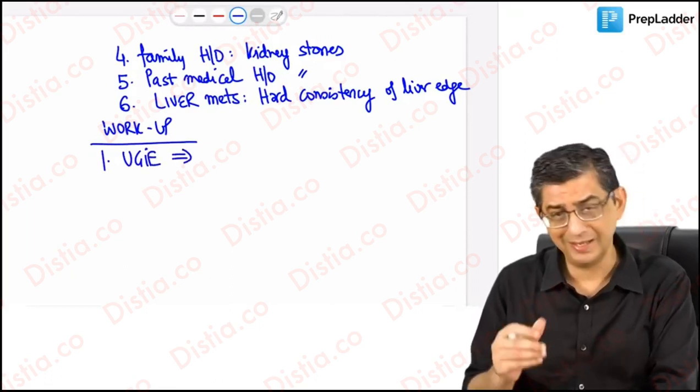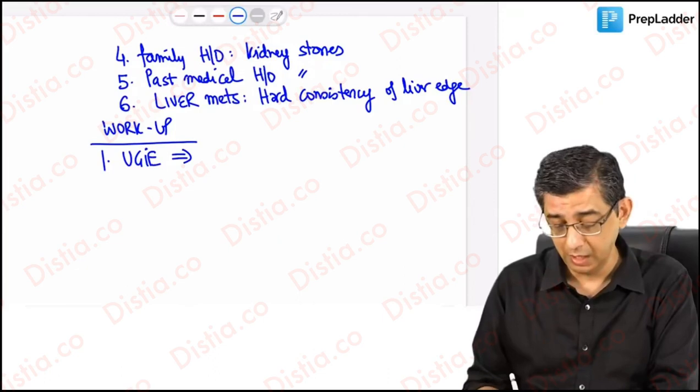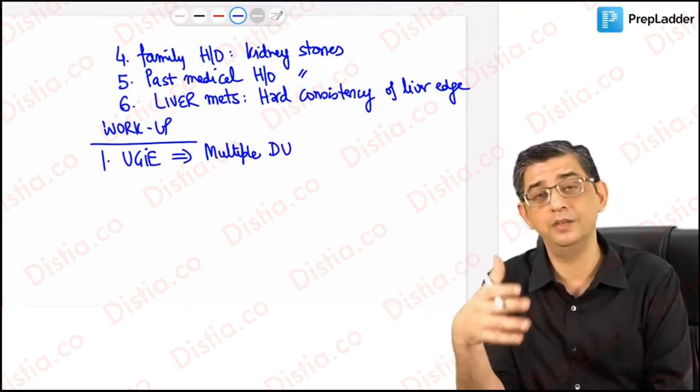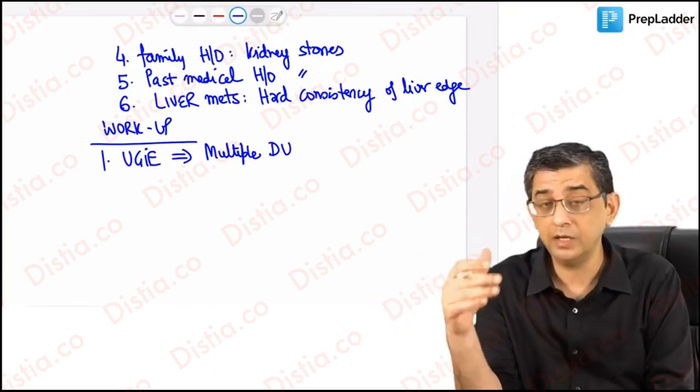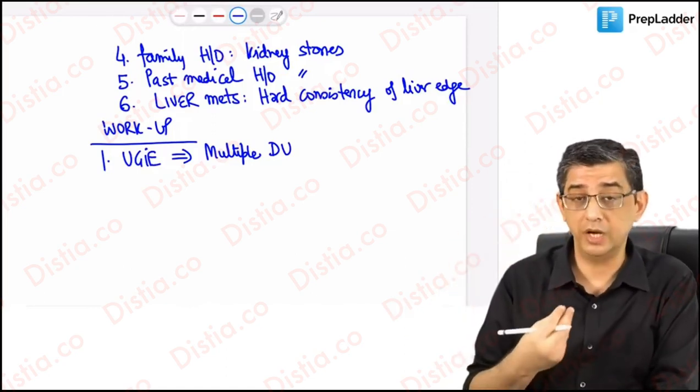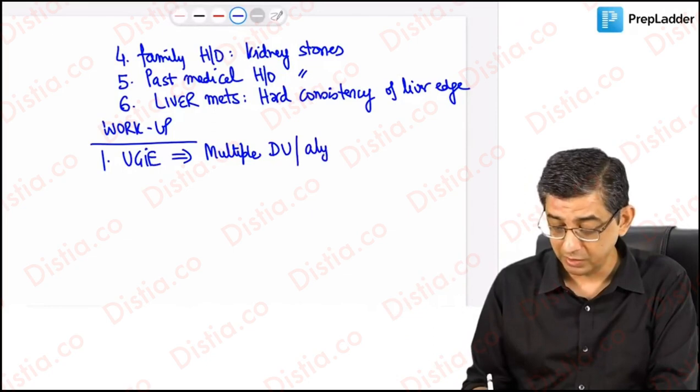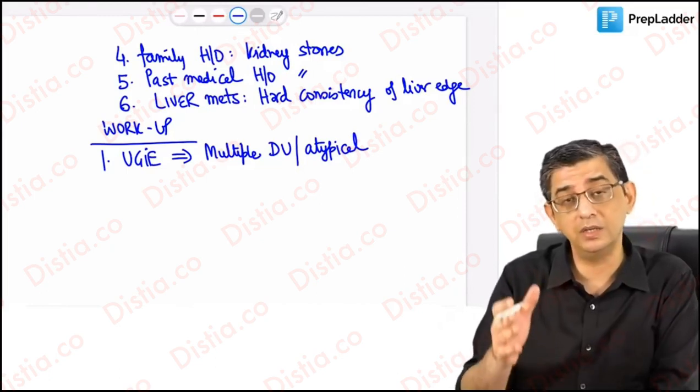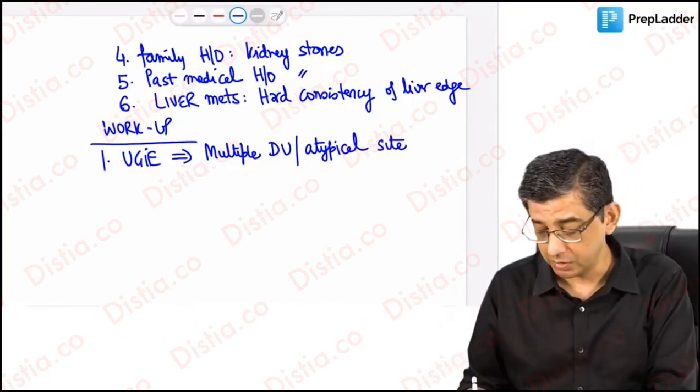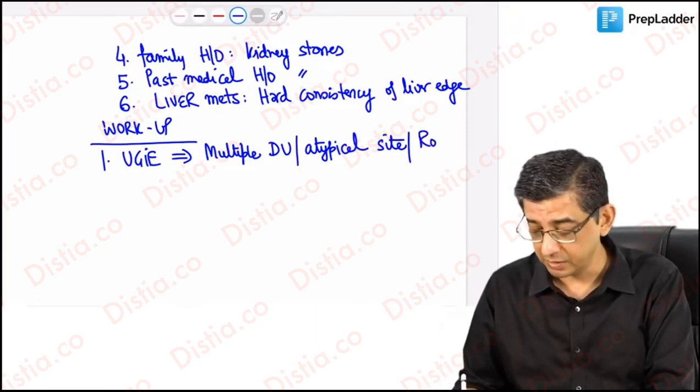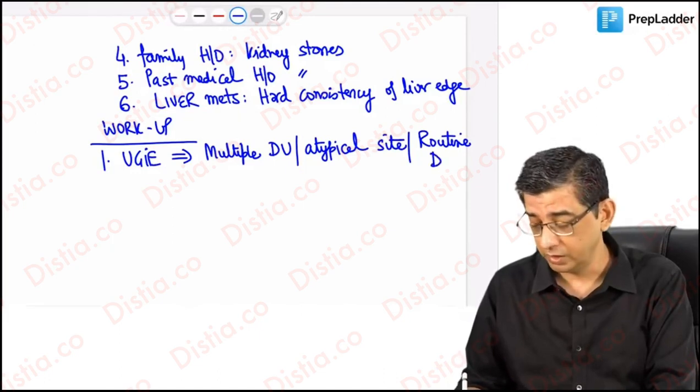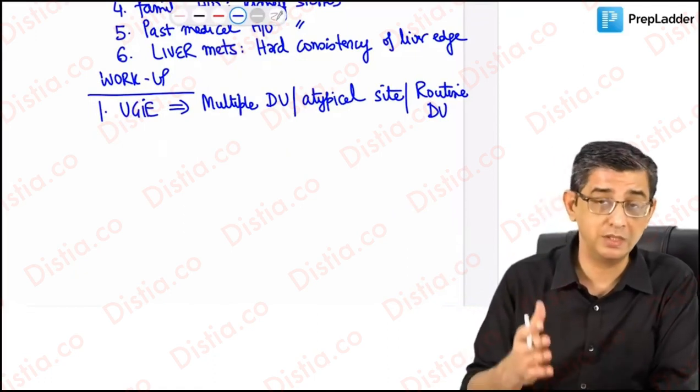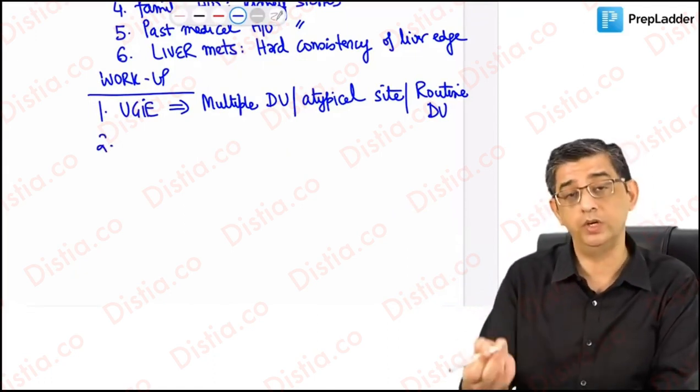I shall now be talking regarding workup of these patients. First, I'll describe upper endoscopy findings. The examiner will be leading you to the diagnosis by either writing multiple duodenal ulcers or giant duodenal ulcer. With H. pylori, you usually have a solitary ulcer in the first part of the duodenum, but here he might talk about more than one or giant duodenal ulcer. Sometimes the ulcer might be present in the second part of the duodenum. Here atypical sites can be mentioned.